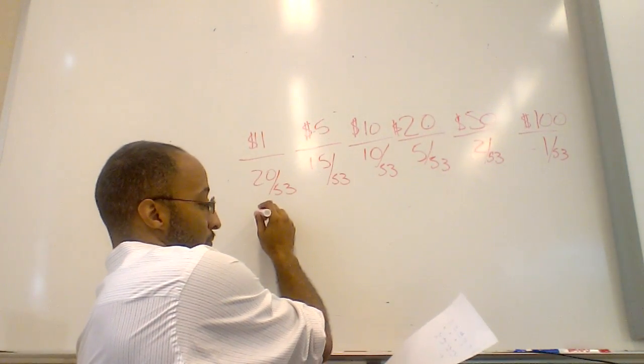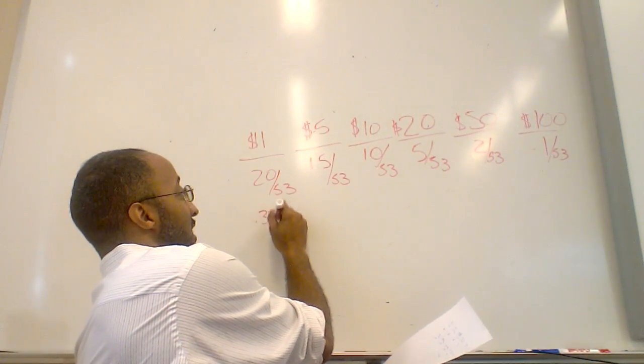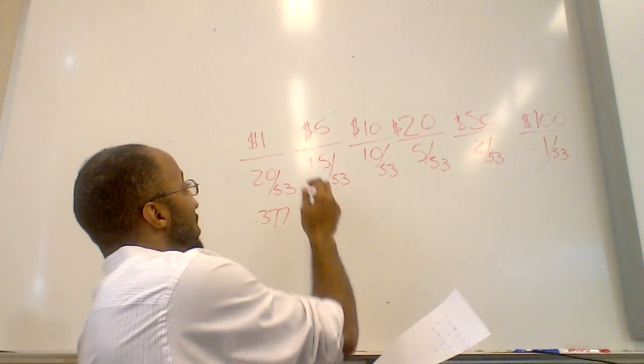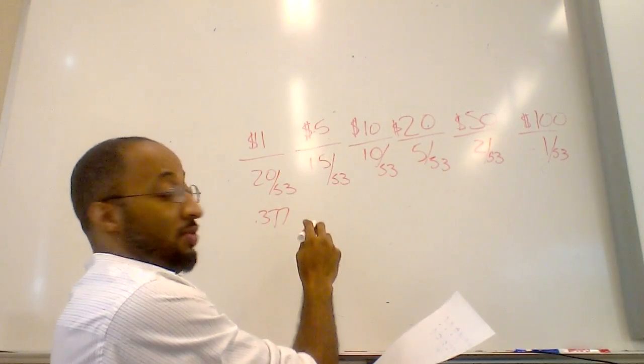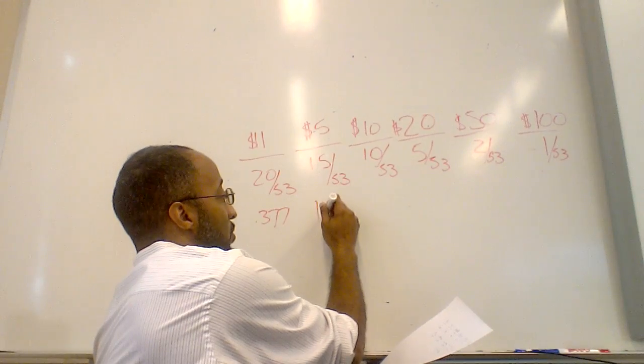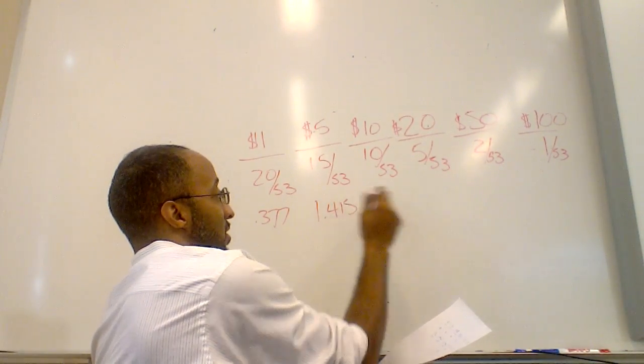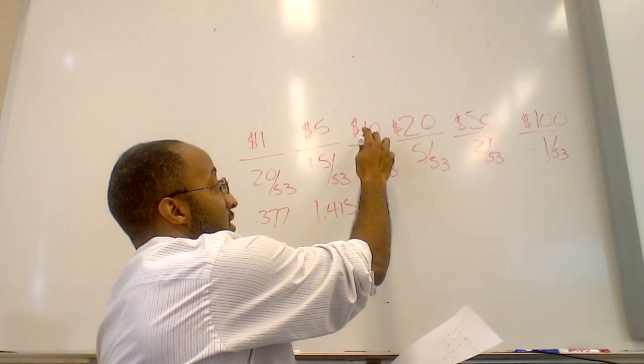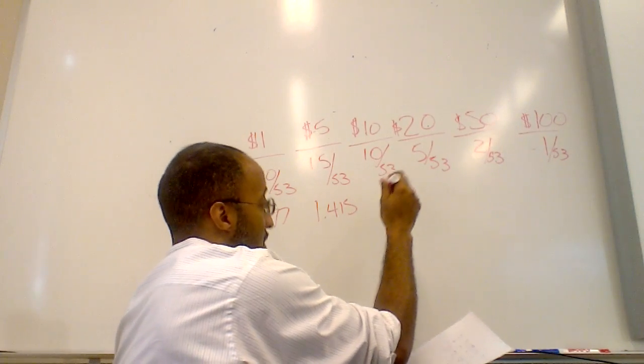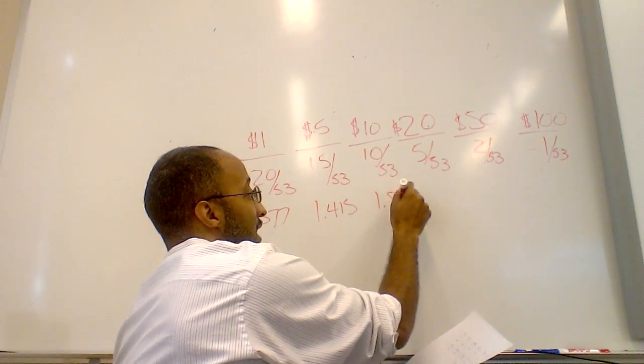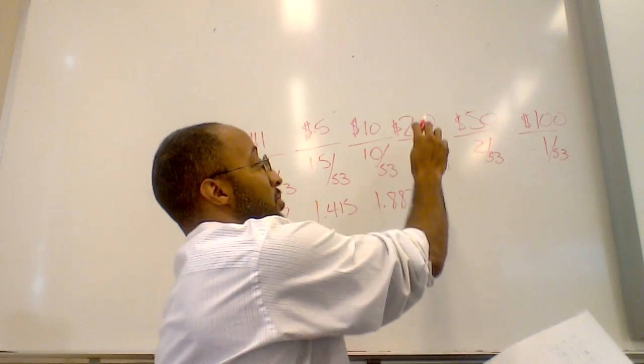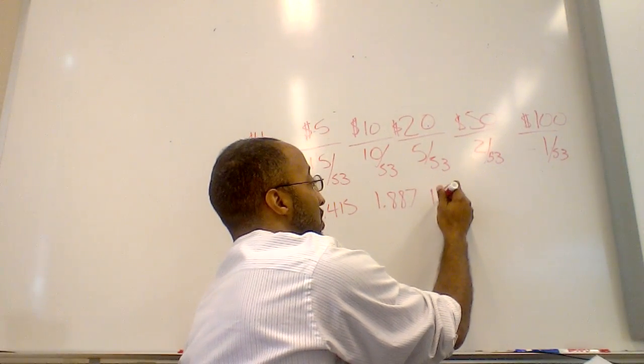So what these expected values are going to be: $0.377 once we multiply them. Once we multiply 5 times 15 over 53, you get $1.415. For 10 here we're going to get $1.887. We multiply 20 times 5 over 53, you will get $1.887.